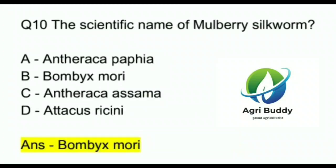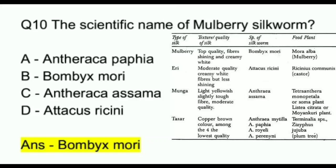Question 10. The scientific name of mulberry silkworm is? A. Anthreca papilla. B. Bombyx mori. C. Anthreca assama. D. Attachys racini. And the answer is Bombyx mori.